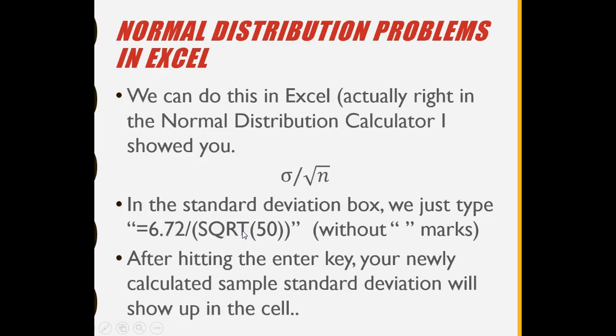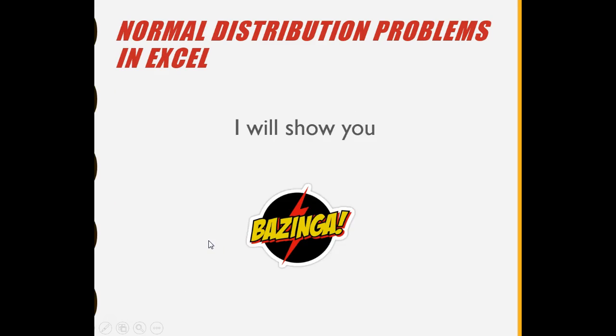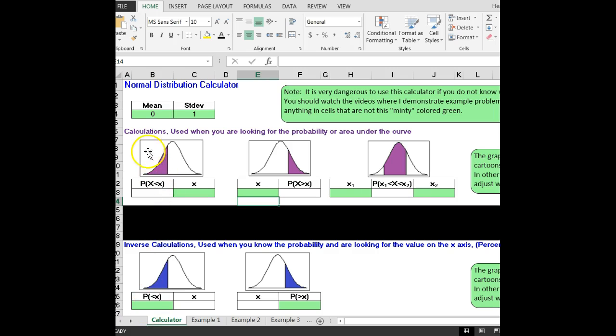We can do this in Excel in the normal distribution calculator that I've shared with you. We can do this calculation. For this one we're going to type equals 6.72 divided by the square root of 50. It's kind of like entering a fraction. When we enter a fraction we say equals three-fourths or whatever, it does the calculation and 0.75 shows up. In this case we're asking it to do this calculation for us. Let's take a look. We are going to enter the mean. The population mean and the sample mean will be the same as the population mean, 145.3.